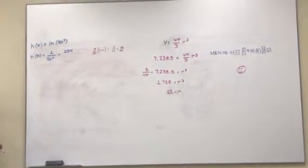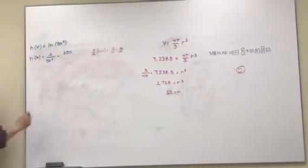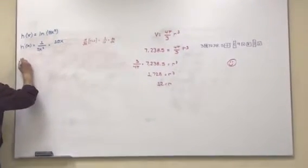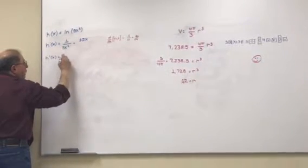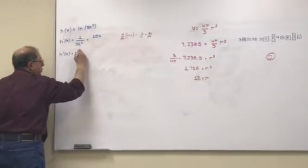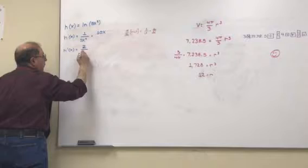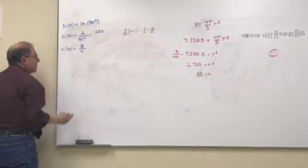That's easy enough. Let's simplify that. So h prime of x, our derivative, is going to be, let's see, 10 over 5 gives us 2, and x over x squared gives us an x in the denominator.